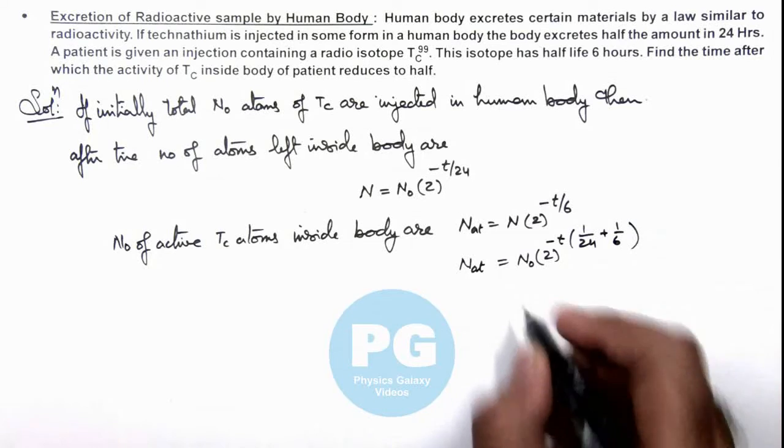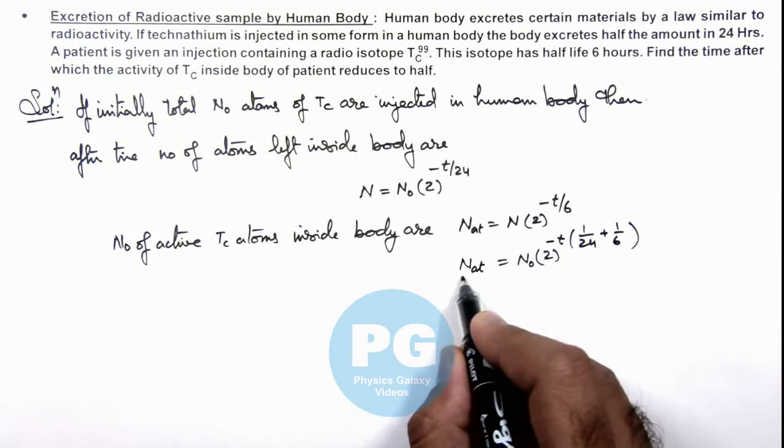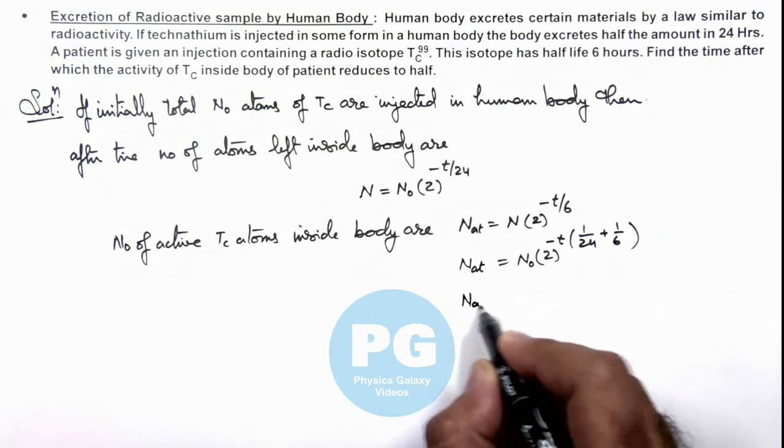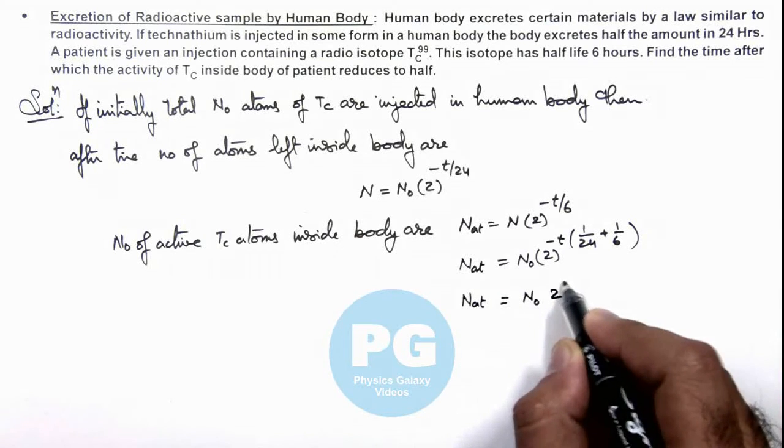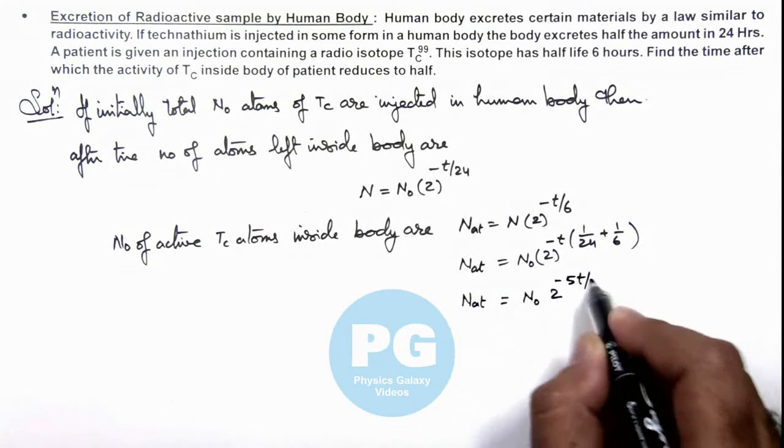On further simplifying, we can get the total number of active atoms are N₀ multiplied by 2^(-5t/24).